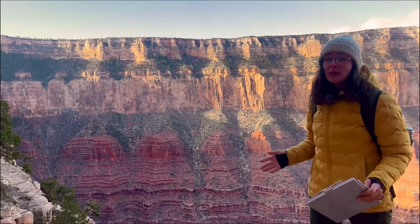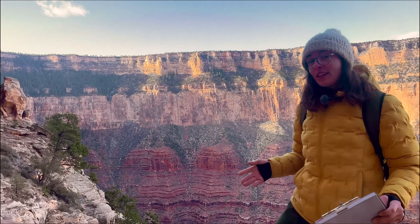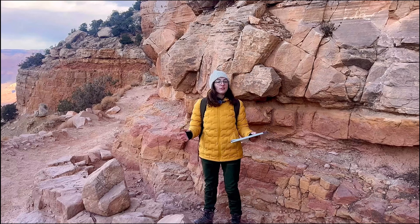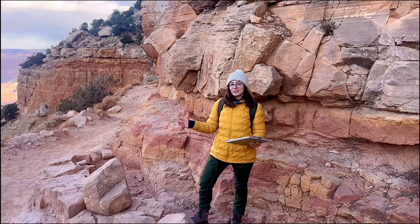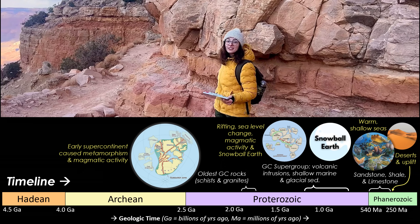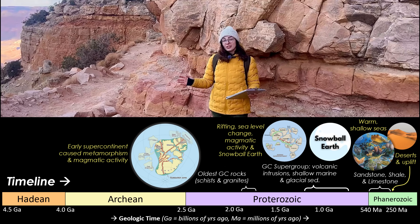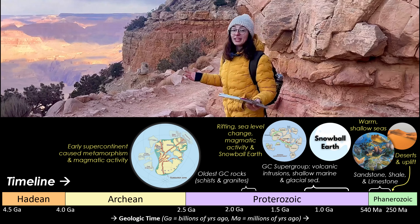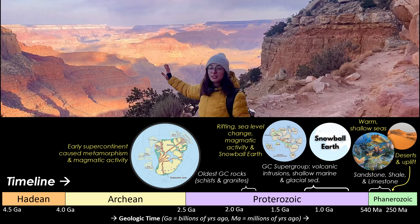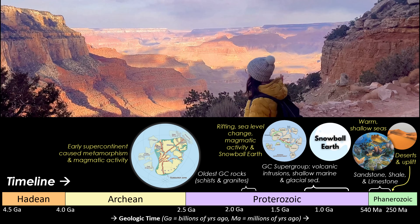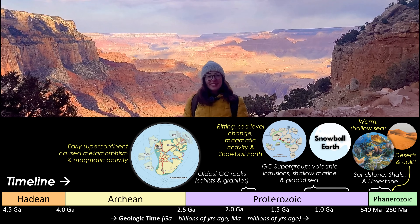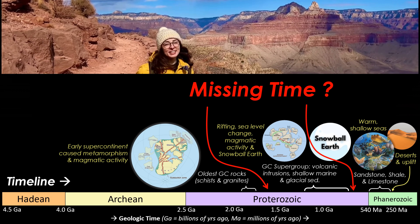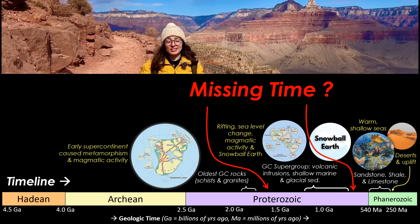Reptiles had appeared by this time, as well as the early ancestors of mammals. Unfortunately, this canyon doesn't preserve any post-Permian Earth history — the youngest rocks here are still over 250 million years old. But two billion years is still nearly half of Earth's history, so I'd say it still did pretty good. That said, there is some missing time between the rocks in this canyon that gets a lot of attention.